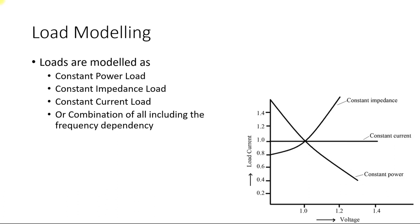An example of a constant current load is a battery, because irrespective of the voltage or power provided to the battery, the charging current should remain the same. When modeling a load, you need to know what kind of load you have. If you have a lighting load, model it as constant impedance. If you have a motor load, model it as constant power. If you have a battery or electronics circuitry that draws constant current, model it as constant current. Or it can be a combination of all three — in such cases, you provide a lump load which is a combination of all of these.